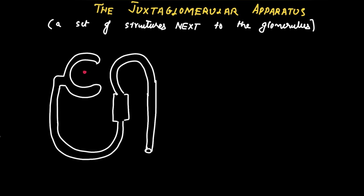There is a ball — a tuft of glomerular capillaries — through which fluid filters from the glomerular capillaries into the Bowman's space, and then into the tubular portion of the nephron. It passes through the proximal tubule, the loop of Henle, the thick ascending limb, then into the early distal tubule, the late distal tubule, and the collecting duct.